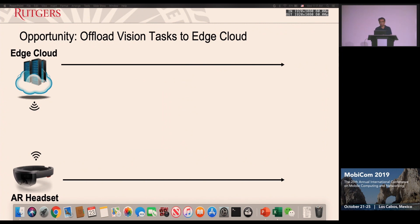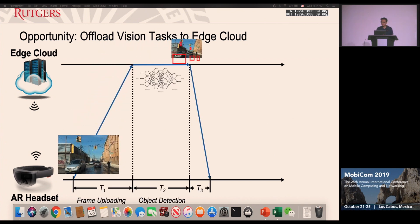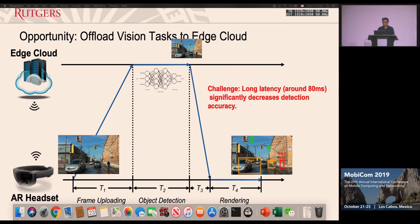There is an opportunity to offload this vision task to an edge cloud, using its powerful resources to make inference faster. The edge cloud can be a nearby desktop PC, a close workstation, or a nearby base station. You offload the captured image through the network to the edge cloud, process it using their powerful computation, and send the results back to the client to overlay on your current field of view. However, even with edge offloading on high-end devices and high-end networks, it still requires around 80 milliseconds to process the full pipeline.